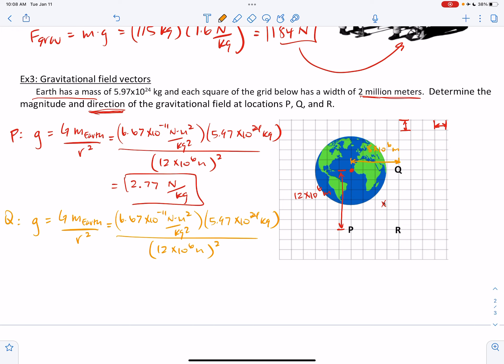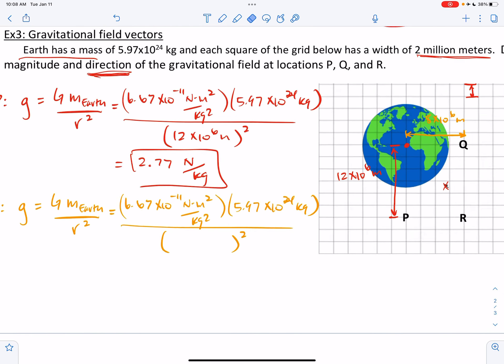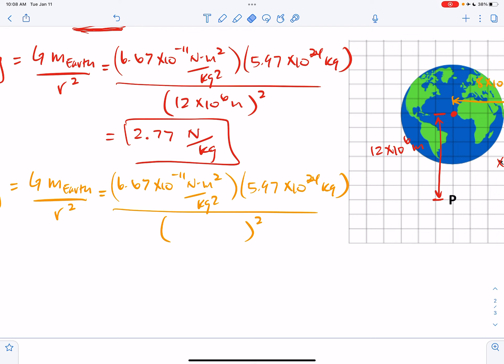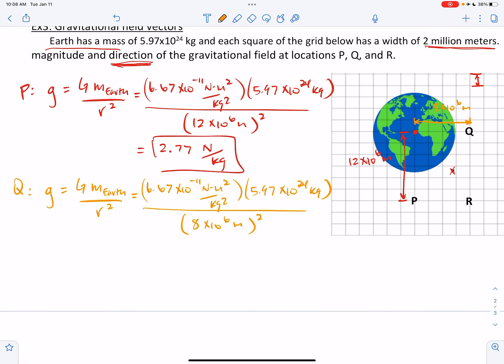So location Q is all the same details, except we're changing the distance. So now we're 8 million meters away. So that's 8 times 10 to the 6th meters. And what we get when we multiply this out is 6.22 newtons per kilogram.